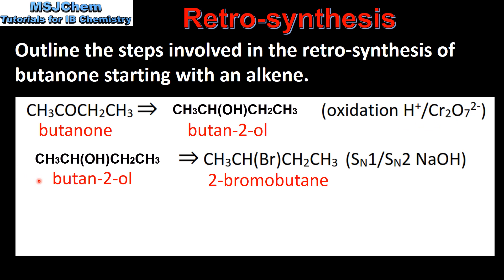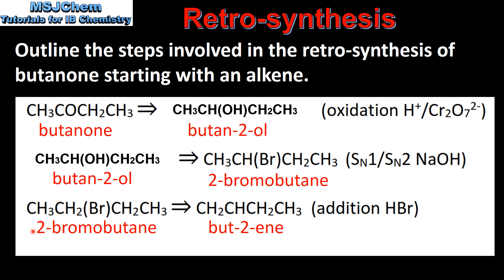Butan-2-ol can be made from 2-bromobutane. This is a nucleophilic substitution reaction using sodium hydroxide. 2-bromobutane can be made from but-2-ene. This is an addition reaction using hydrogen bromide.